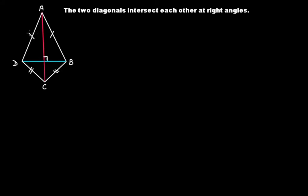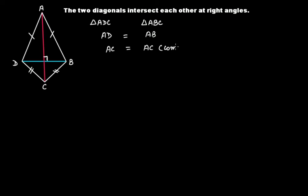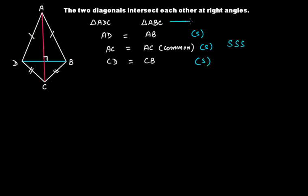First, take triangle ADC and then take triangle ABC. In triangles ADC and ABC, we can see that AD is equal to AB, AC is equal to AC because it is common, and CD is equal to CB. So we have two sides equal, this side is common, and we have another pair of equal sides. From the SSS criterion, we can say that these two triangles are congruent.